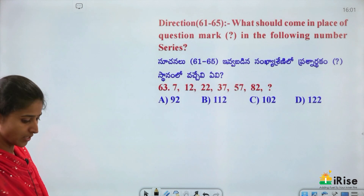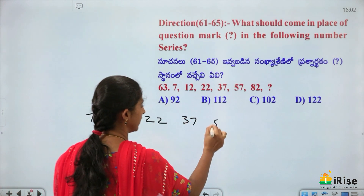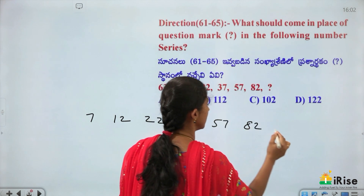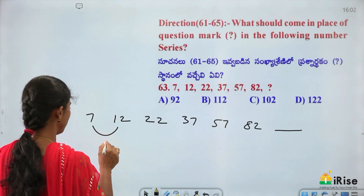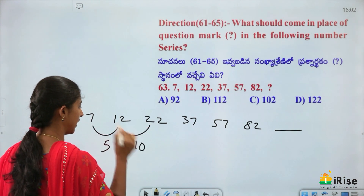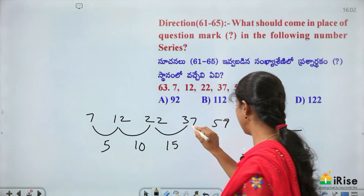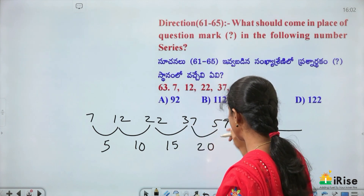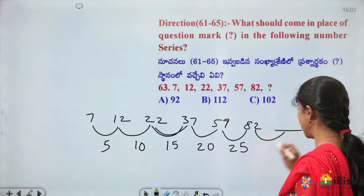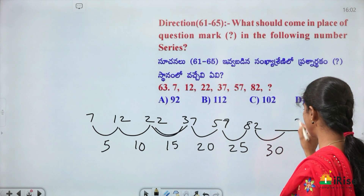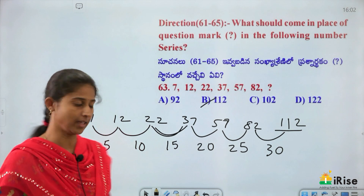Series: 7, 12, 22, 37, 57, 82 — what is the next number? The differences are 5, 10, 15, 20, 25 — increasing by 5 each time. Next difference is 30. So 82 + 30 = 112 is the answer.